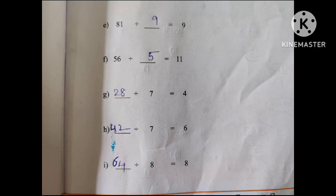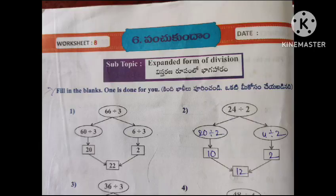28 divided by 7 equals 4. 42 divided by 7 equals 6. 64 divided by 8 equals 8. Next, Worksheet 8: Fill in the blanks — one is done for you.